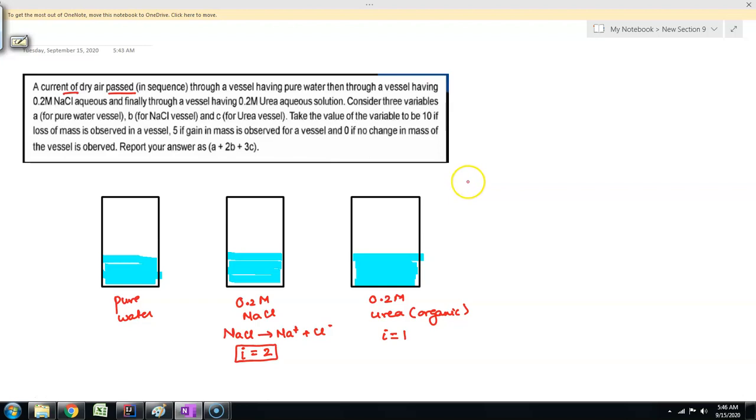Let us take for example some numerical value of what can be the maximum water vapor that can be held by dry air at that temperature. Let us say at that temperature the total water vapor pressure that can be held by air is 40 torr. I'm just taking some representative values.